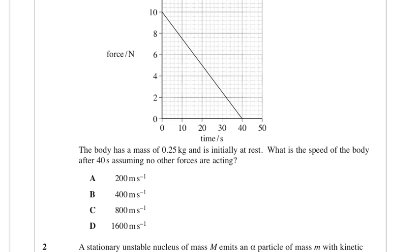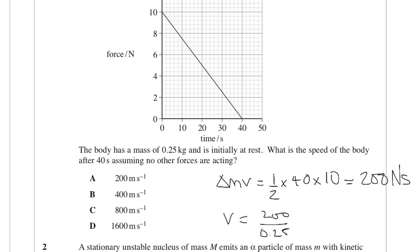So the change in momentum is the area under the graph, so it's going to be half base times height, so half times 40 times 10. That's 400 over 2, so that's going to be 200 newton seconds. And then the velocity is going to be that divided by the mass, so 200 divided by 0.25, which is 800 metres per second, so answer C.